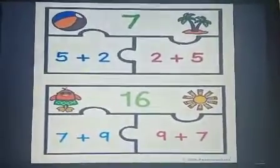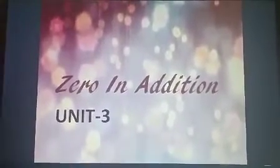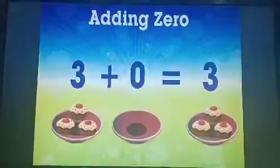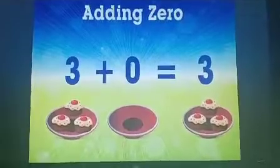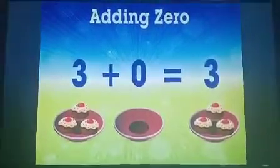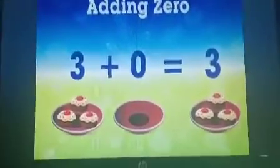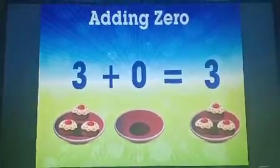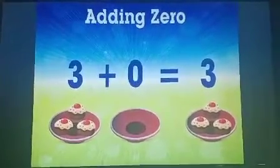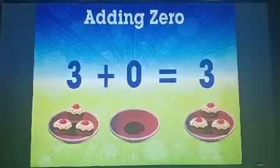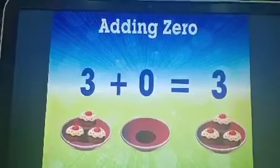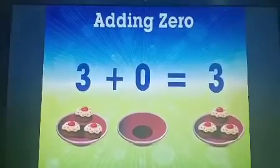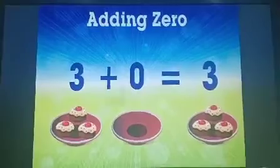Now, we will see 0 in addition. Let's see what happens when 0 is added to any number. There are 3 cakes in the first bowl and 0 cake or no cake in the second bowl. How many cakes are there in both the bowls in all? Here 3 plus 0 is equal to 3.